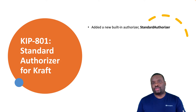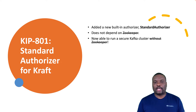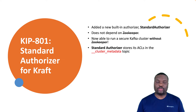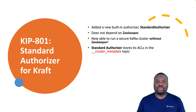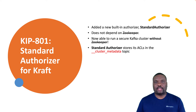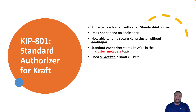KIP 801 introduced a standard authorizer that does not depend on Zookeeper, so you can now run your Apache Kafka cluster without Zookeeper. This works by storing the authorizer's metadata in an internal topic on the controllers known as __cluster_metadata. This is where the authorizer's metadata is kept, and it is the default used by all nodes that are part of the cluster.